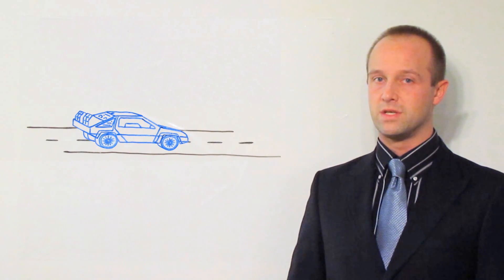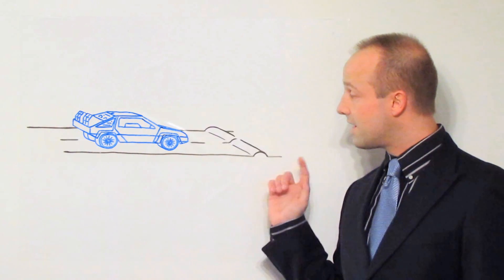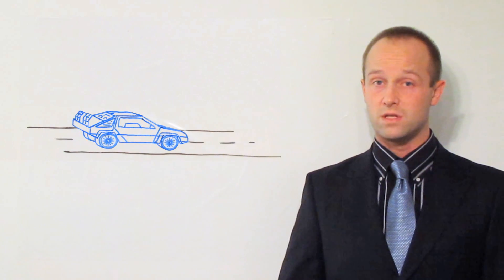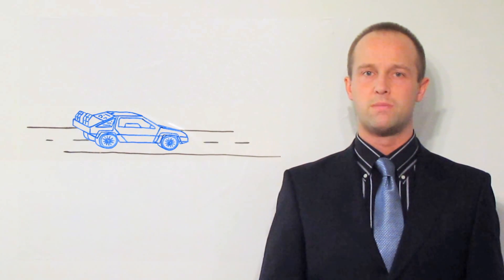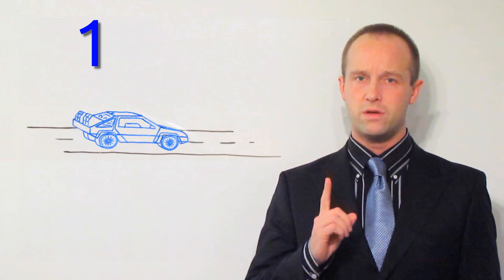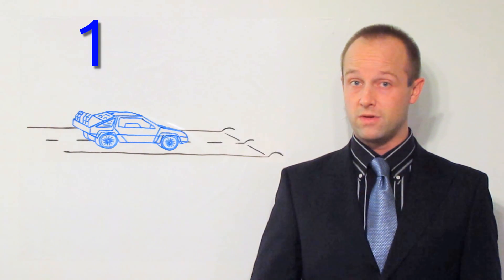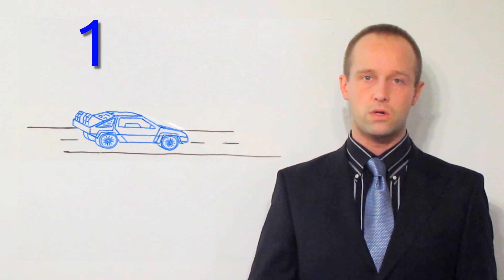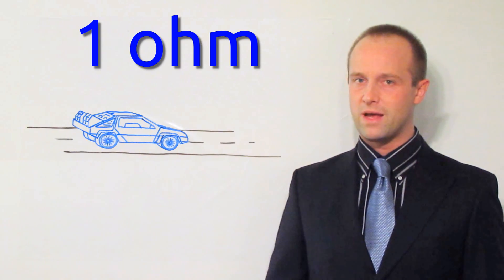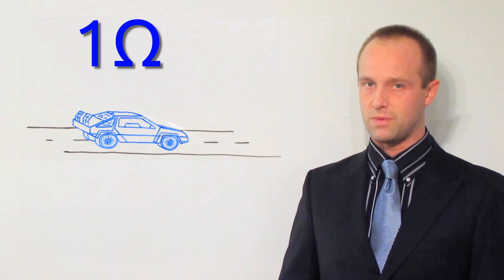We can even add some numbers to this. Now let's say that each one of these bumps, as the car moves along the road and hits the bump, each one of those bumps, we'll call that one unit of difficulty. And now the units that we actually deal with when we're talking about resistance are ohms. And we have this Greek letter, omega, to represent them.